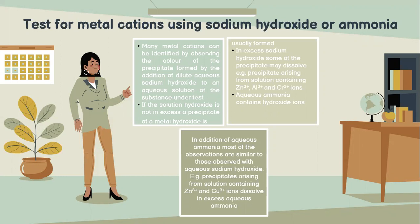Aqueous ammonia contains hydroxide ions. On addition of aqueous ammonia, most of the observations are similar to those observed with aqueous sodium hydroxide. For example, precipitates arising from solutions containing Zn2+ and Al3+ ions dissolve in excess aqueous ammonia.